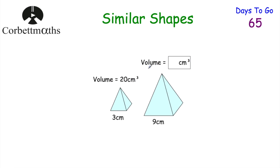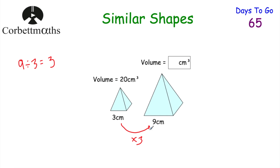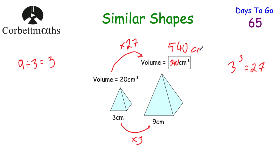Here's a question for you to try. We've got two square-based pyramids: a smaller one with width 3 cm and a larger one with width 9 cm, and the volume of the smaller one is 20 cm³. Can you work out the volume of the larger one? The scale factor for the sides is 9 ÷ 3 = 3. The volume scale factor is 3 cubed = 27, so the larger volume is 27 times bigger. 20 × 27 = 540, so the volume of the larger pyramid is 540 cm³.